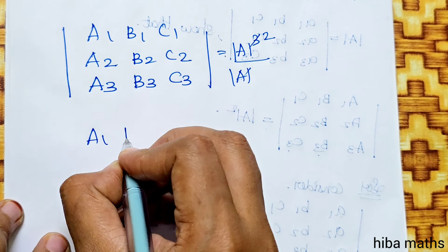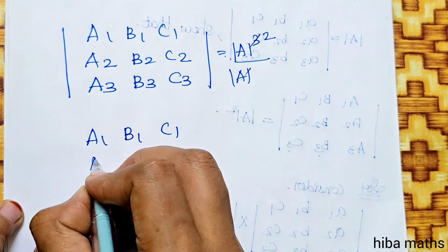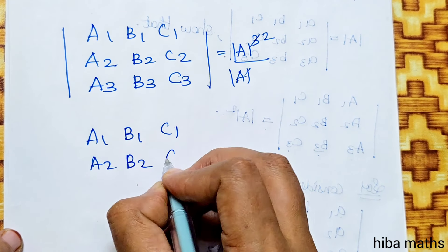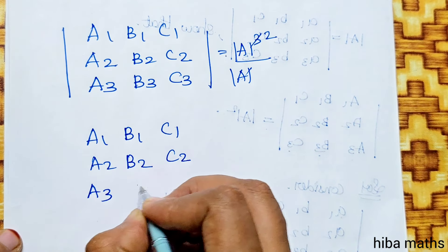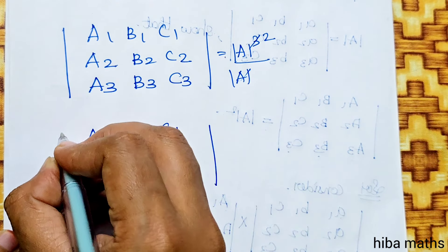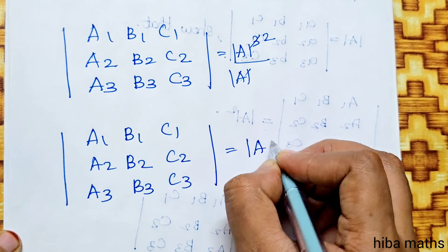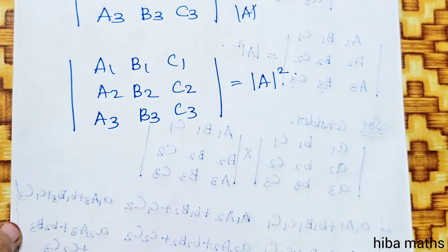then by division: A1 B1 C1, A2 B2 C2, A3 B3 C3 equals modulus of A cubed divided by modulus of A, which equals modulus of A squared. Hence proved.